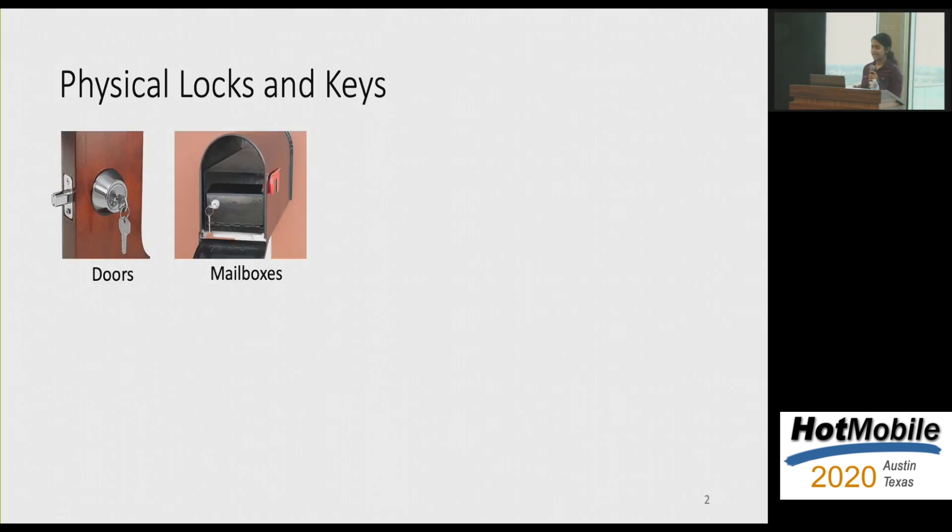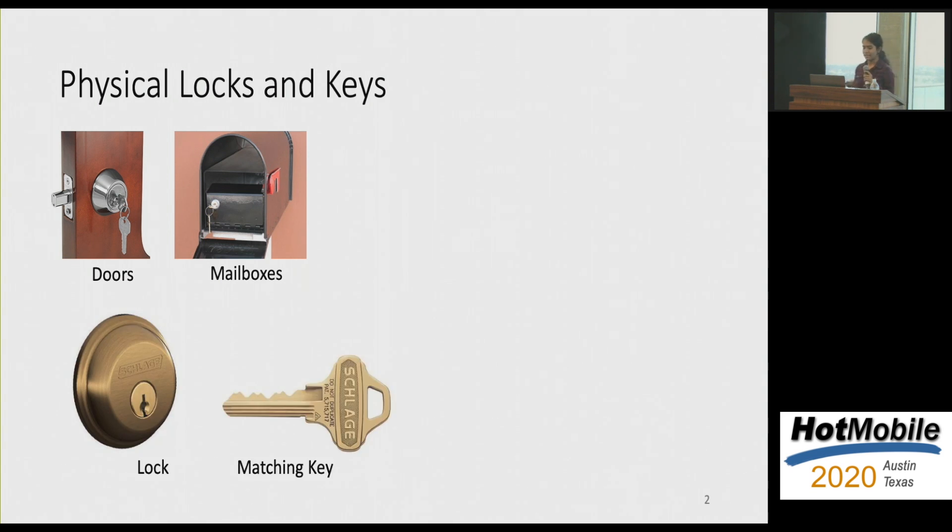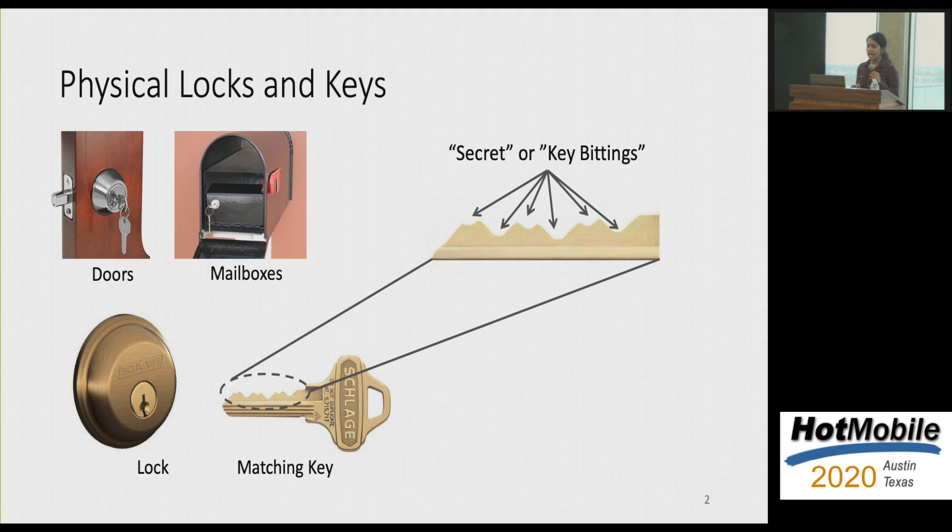Physical locks and keys are primarily used to secure doors and mailboxes. The basic working principle consists of a lock and a matching key which is used to unlock this lock. If you see the secret embedded in this key itself, it's actually present in the shape of this key, where it has these cuts of different depths, which are actually the secret, and they're commonly referred to as key bittings.